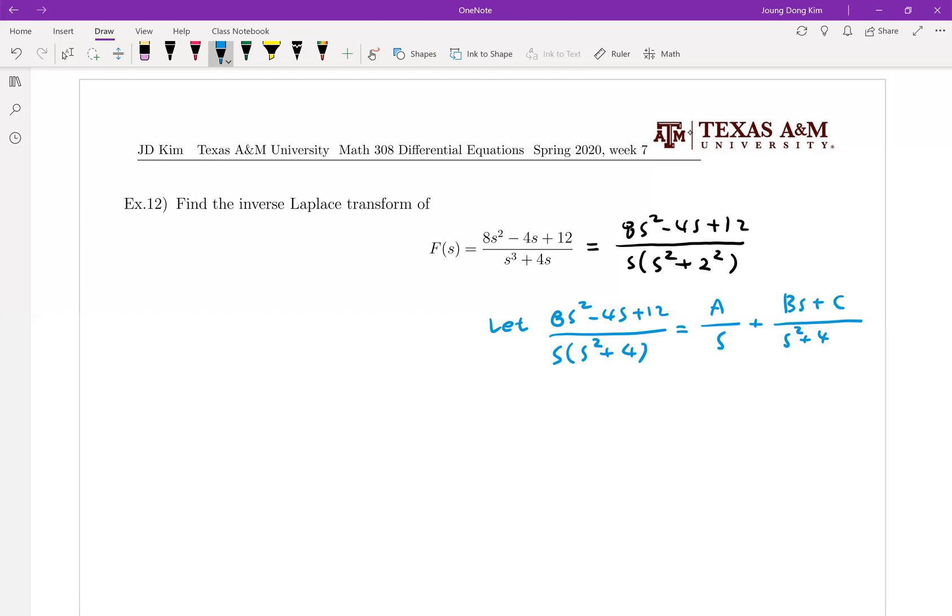Then when you multiply s and (s² + 4) on both sides, this will be 8s² - 4s + 12 must be equal to A(s² + 4) + (Bs + C)s. Is it okay so far?